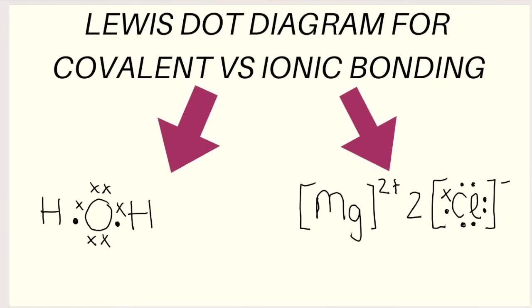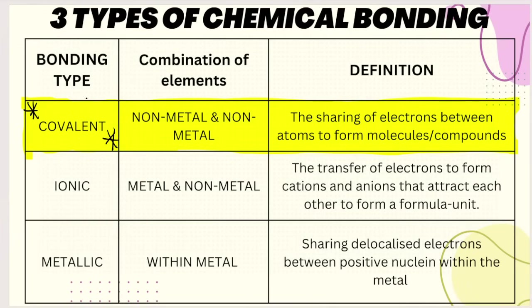The first thing I wanted to point out is that there is a difference in how your Lewis dot diagram looks for a covalently bonded molecule — which we can see here on the left, this is water, H2O — versus an ionic bond which we see on the right. Covalent bonding involves the sharing of electrons between atoms to form molecules or compounds. Sharing is the key word here — the sharing of valence electrons — and it takes place between a non-metal and a non-metal.